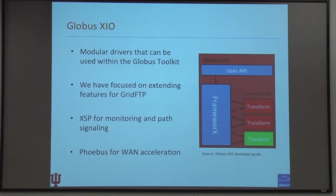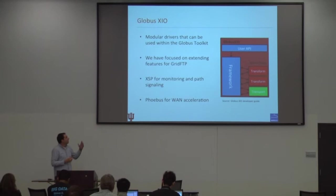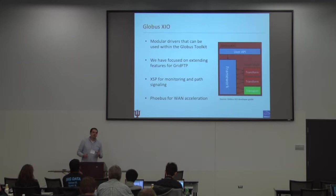The transport drivers are the built-in TCP driver, UDT driver, and so forth. On top of those, you can have a number of transform drivers like GSI security, and the features that we've developed, which is built on XSP. These can add additional functionality for monitoring, and something we're working on now is dynamic path signaling to support bulk transfers with GridFTP. We've also looked at adding library support into the driver framework for WAN acceleration using a software project called Phoebus.